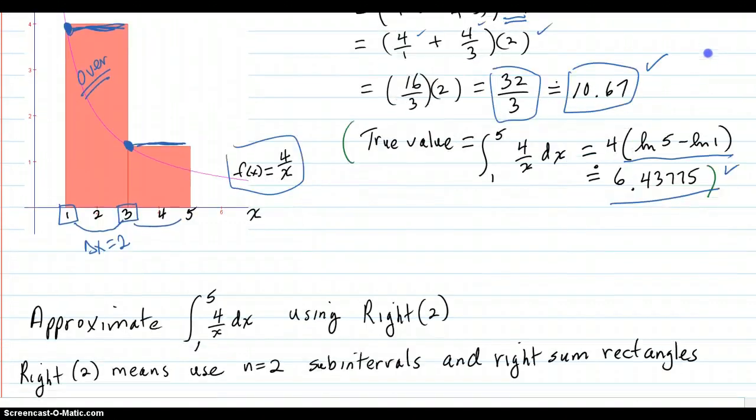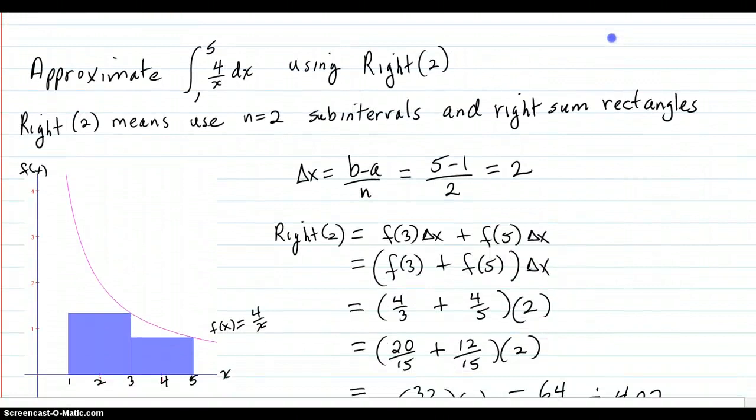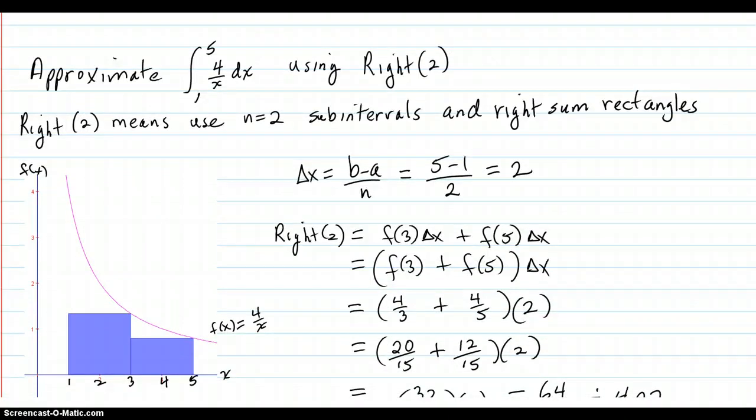Okay, now we move on to right method with two sub-intervals. So right two means use n equals two sub-intervals and use the right sum rectangle method. So again, the computation of delta x gives you the two.